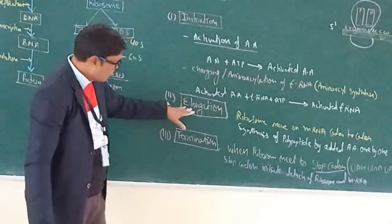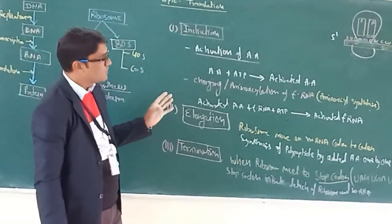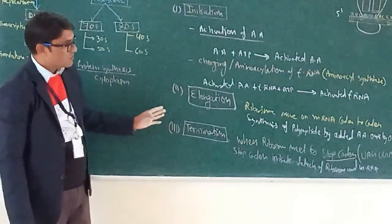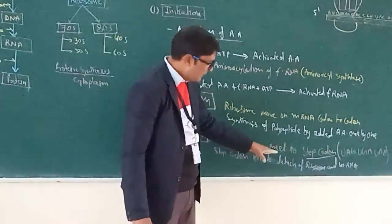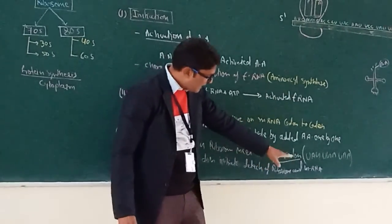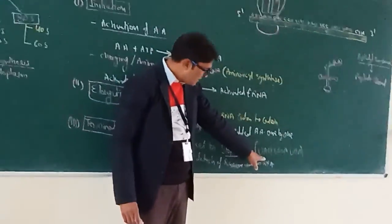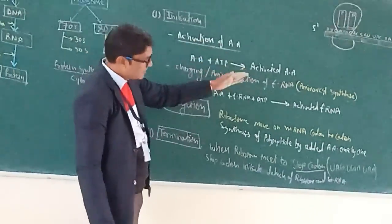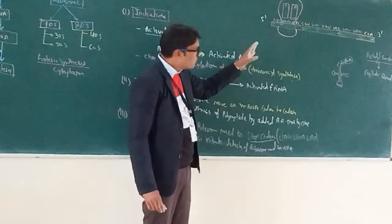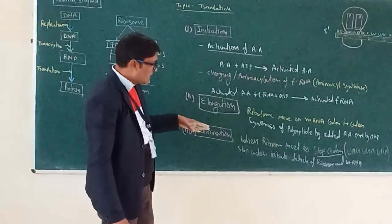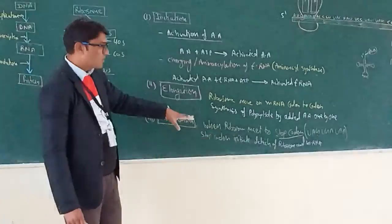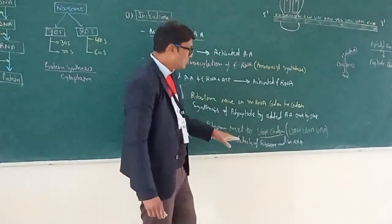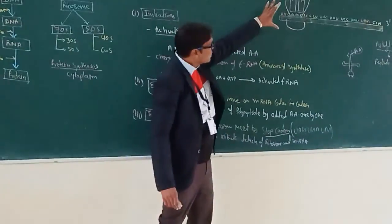After elongation, where ribosome moves on mRNA, at the end of this process, ribosome will encounter a different type of codon which is known as the stop codon. Here we can see there are three stop codons in our living system: first UAG, second UAA, and third UAA. When ribosome meets with the stop codon, the protein synthesis process is terminated, and this step is known as termination. When ribosome meets the stop codon, it initiates the release of the total complex.